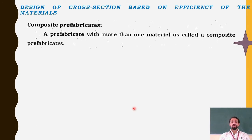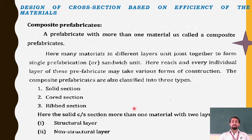Composite prefabricates are those with more than one material. Wherever we find prefabrications with one or more than two materials, we call them composite prefabricates. Many materials in different layers are joined together to form a single prefabrication or a sandwich unit. Each individual layer may take various forms of construction. Composite prefabricates are also classified into three types.